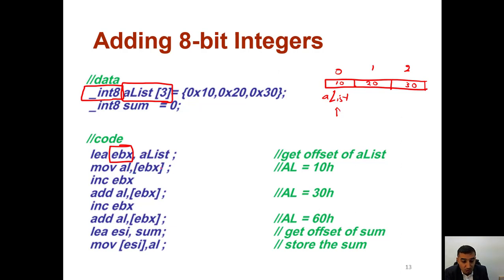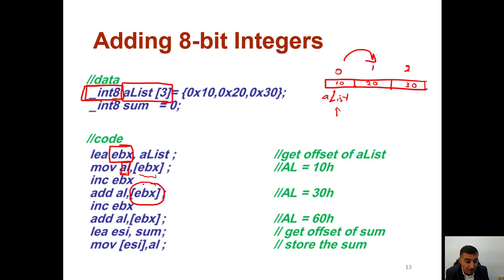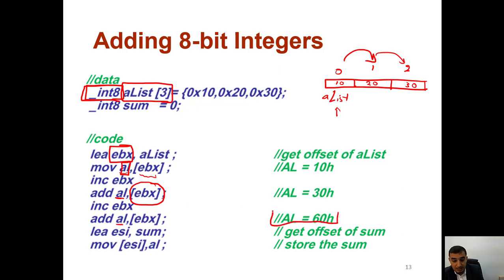Move EBX to AL means move whatever is in the memory location specified by EBX into AL, because AL is 8-bit. Since 'a list' is defined as __int8, we can move whatever is in that memory location into AL. Increment EBX to go to the next location, then add EBX to AL. Now we are going to add whatever is in the memory location specified by EBX into AL. The result will be stored into AL, so we have 10 plus 20 which is 30.